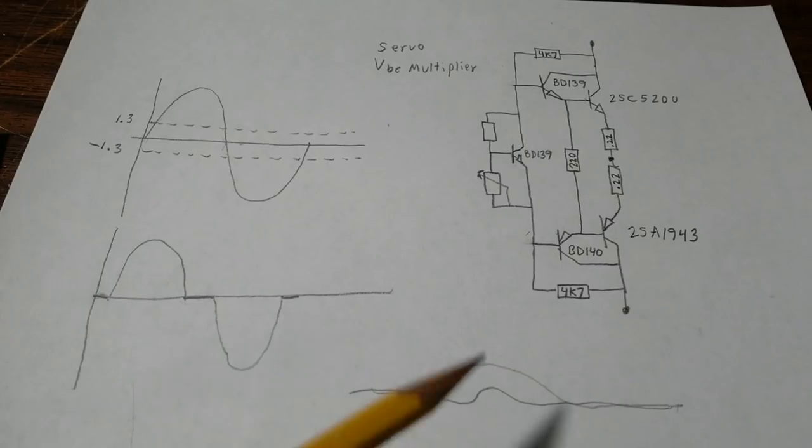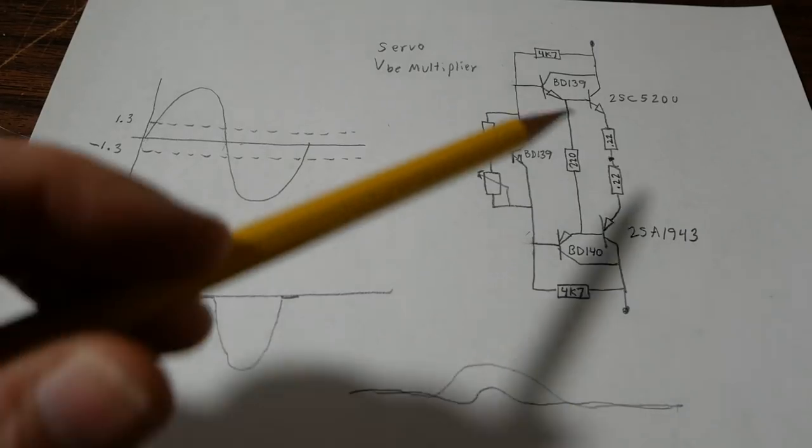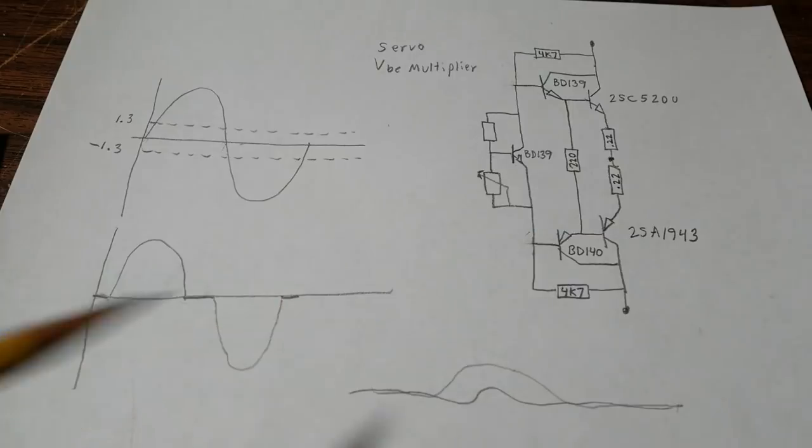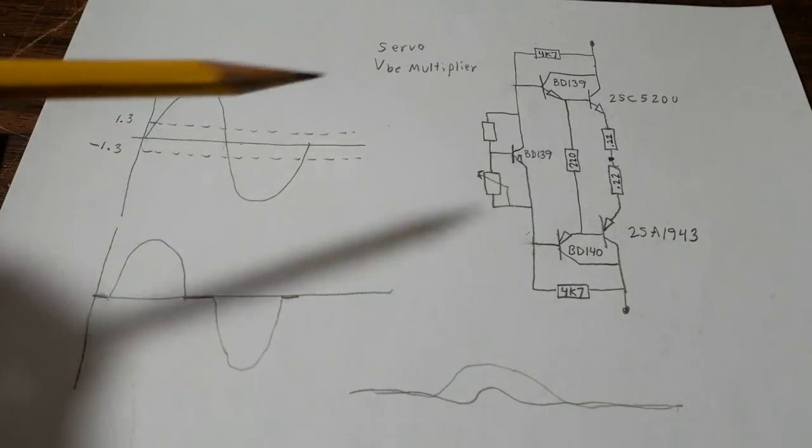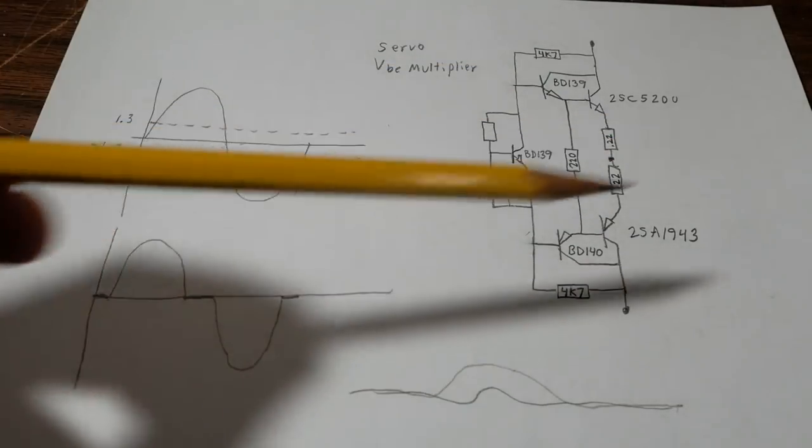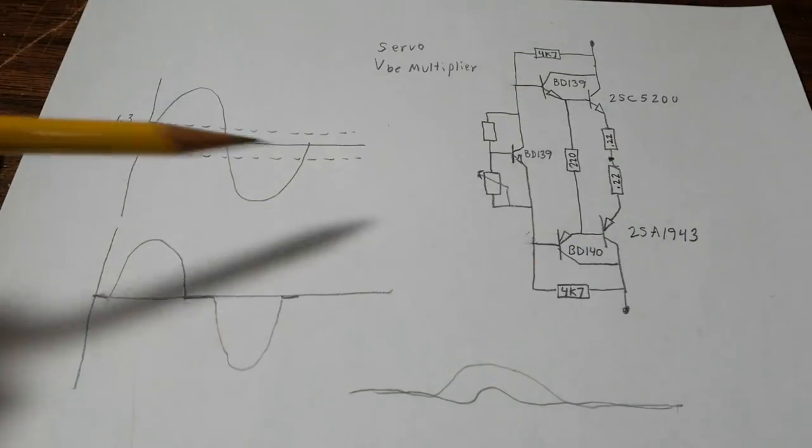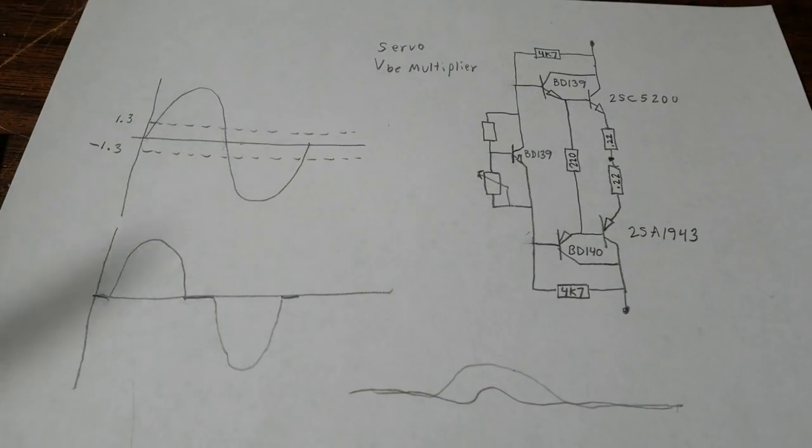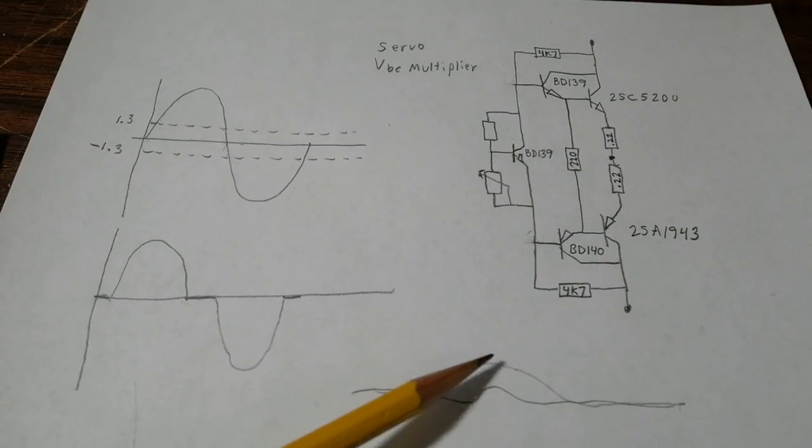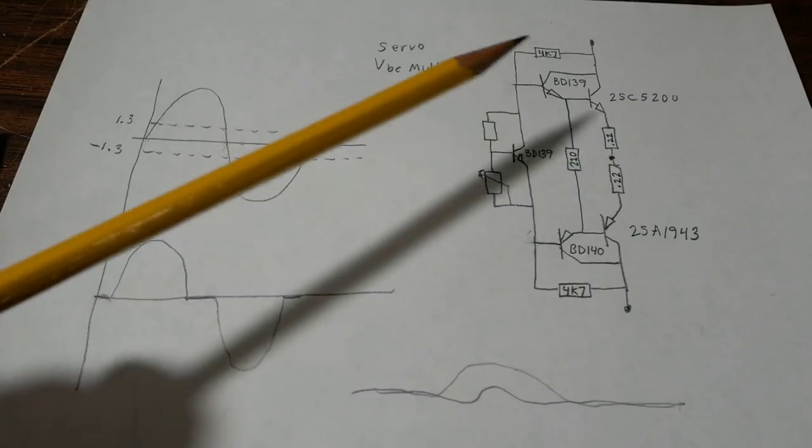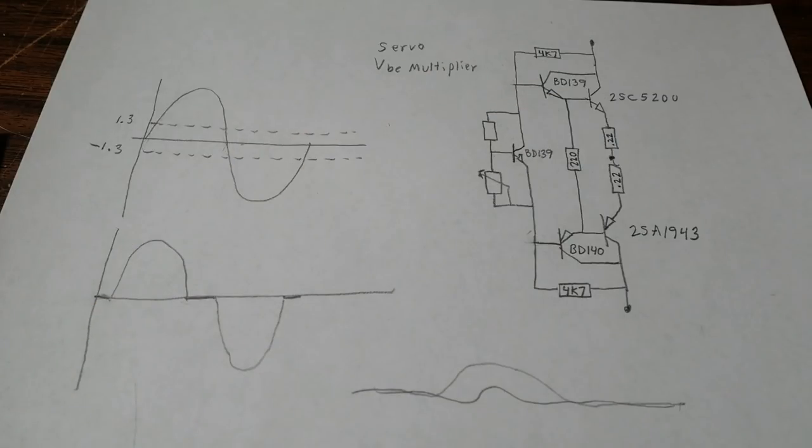And the astute viewer might say why isn't that a problem with class A amplifiers. Remember class A amplifiers are run with both transistors conducting at high current at full 360 degree cycle. The upper and the lower transistors would be conducting in a full 360 degree cycle of the waveform. Both transistors are always conducting you're not running in and out of that GM doubling region.